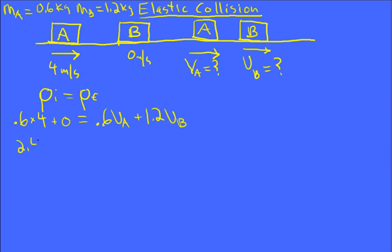And so if we work this out, we can see that we are left with two unknowns and one equation. If this was an inelastic collision, we'd be able to solve for the one unknown. But we also know in an elastic collision the initial kinetic energy equals the final.